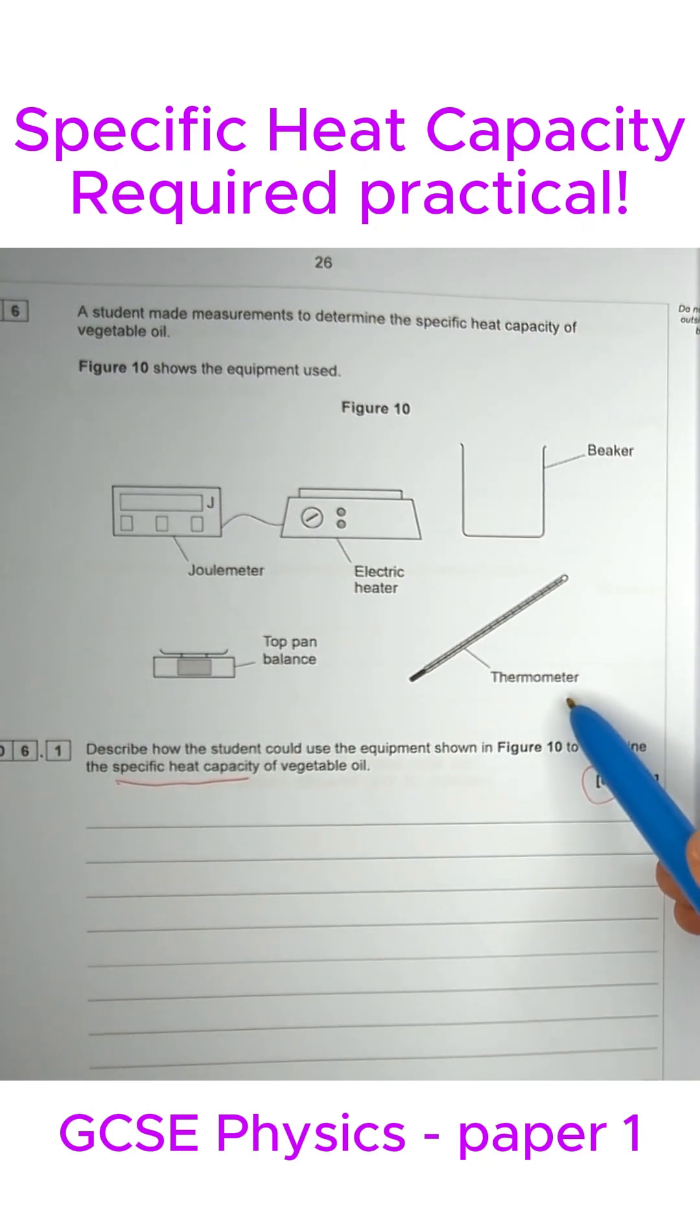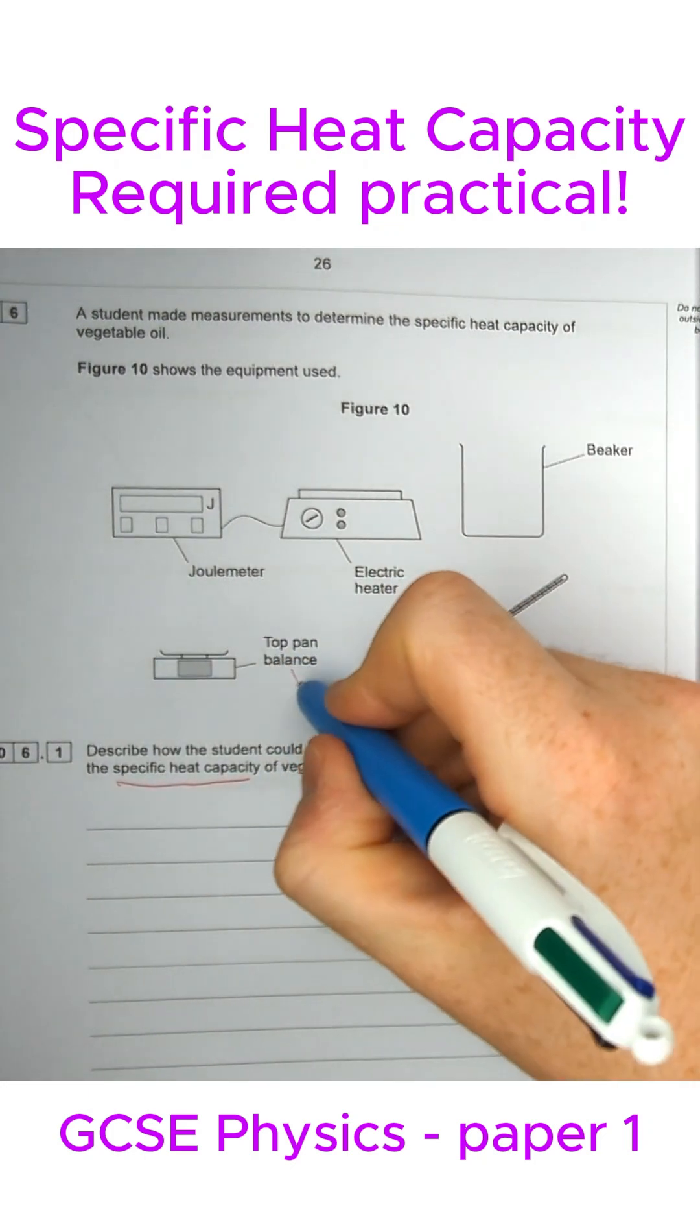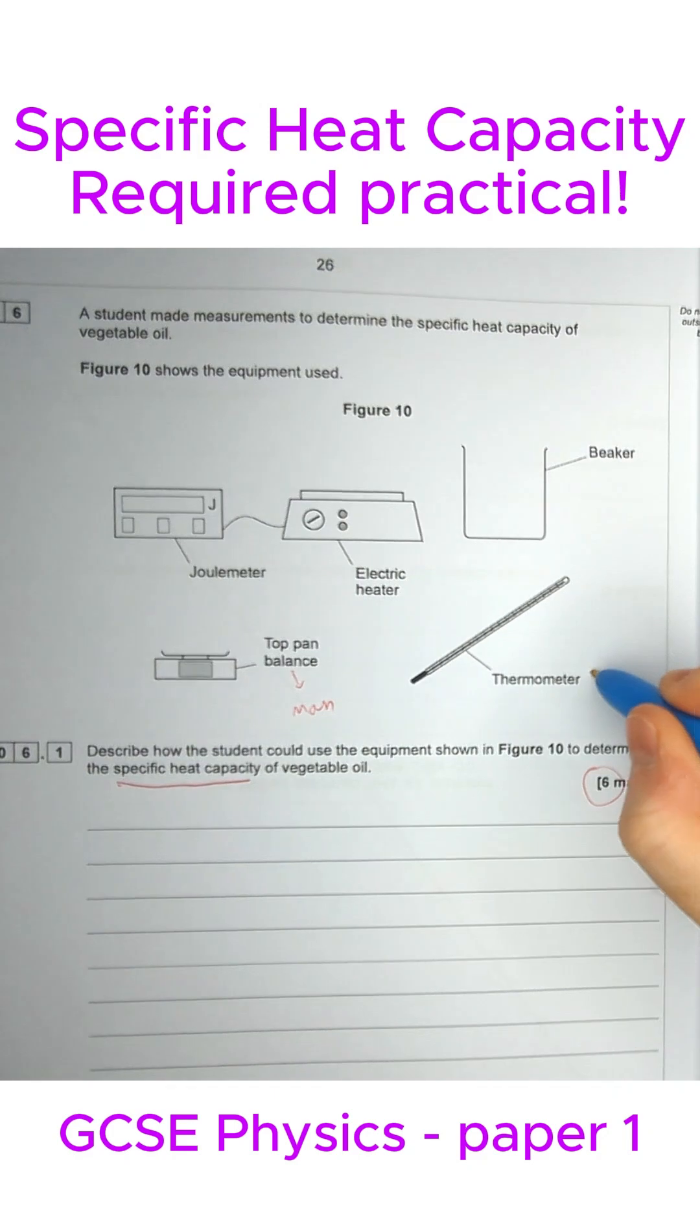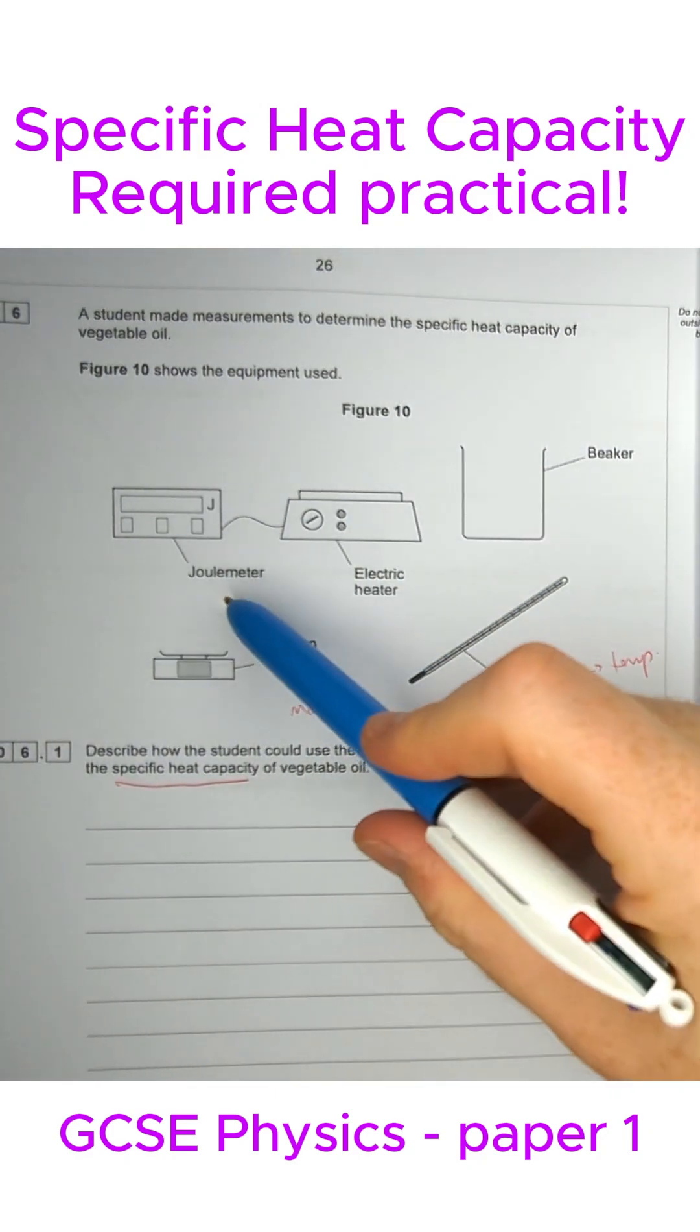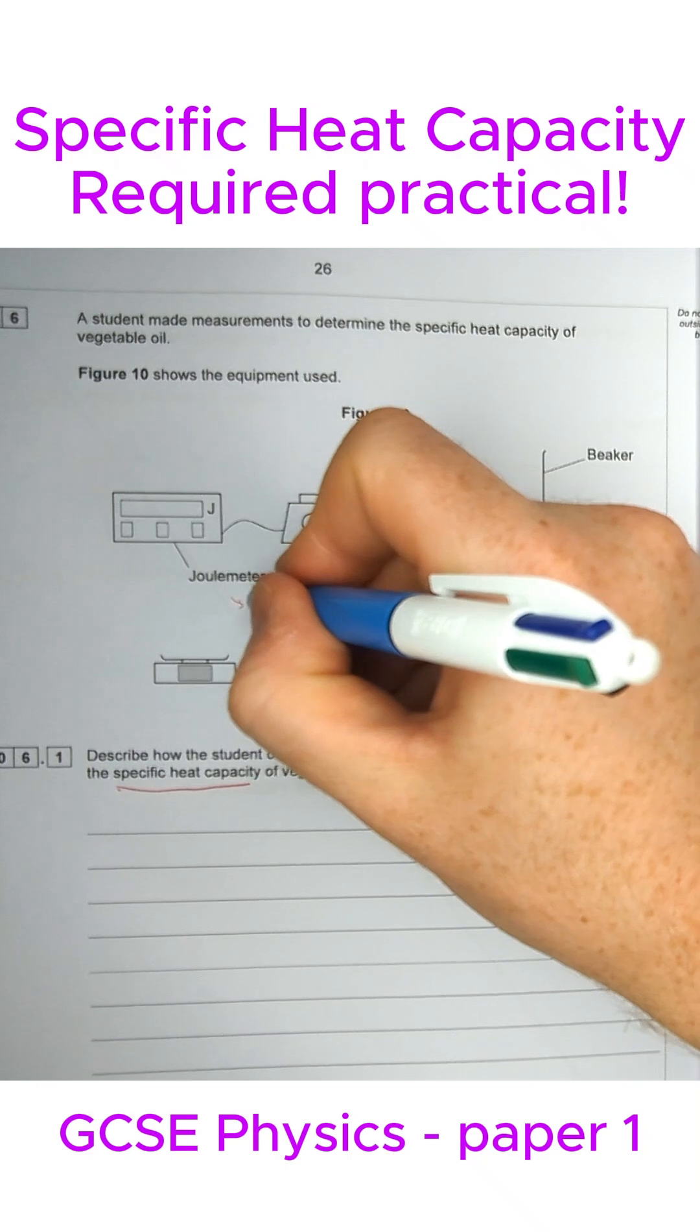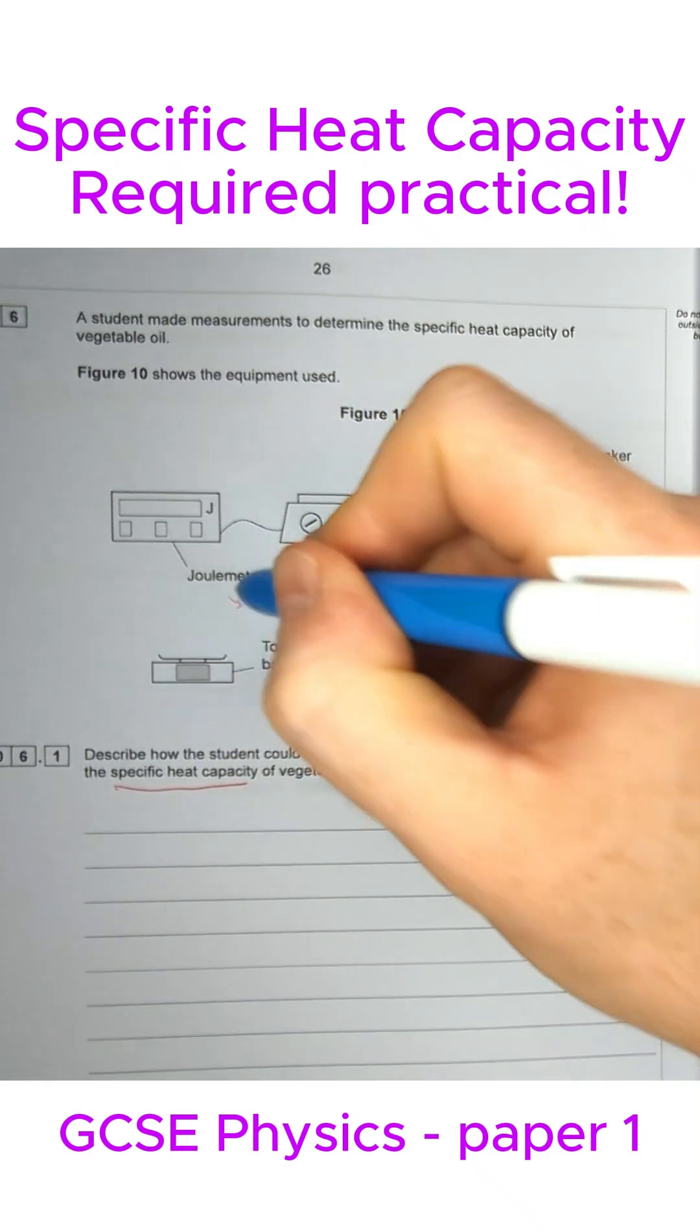Let's talk about what each thing's for. Thermometer - easy, that's to measure temperature. Top pan balance - we use that to measure mass. We've got a beaker which we're going to talk about in a second. We've got a heater and a joule meter.